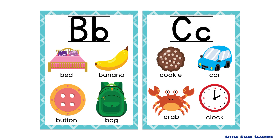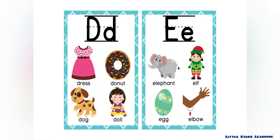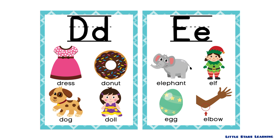D is for dress, donut, dog, and doll. E is for elephant, elf, egg, and elbow.